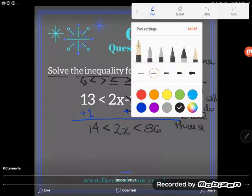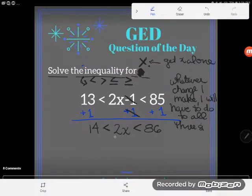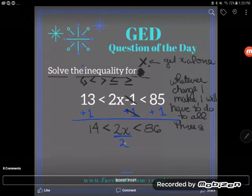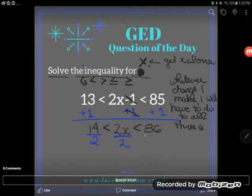My x is almost alone. But it has this 2 that it's multiplying with. So, the opposite, I know they're multiplying because they're shoved together, guys. The opposite of multiplying is dividing, so I'll divide by 2. And you can do whatever you want as long as you do it to all of the expressions.